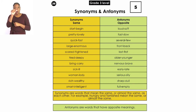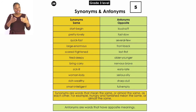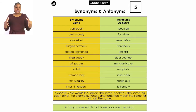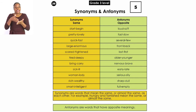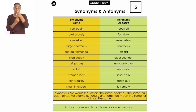You can see that in the yellow column all the words mean the same as another word or almost the same. 'Start' can mean 'begin,' 'pretty' can mean 'lovely,' 'quick' can mean 'fast,' 'large' can mean 'enormous,' 'scared' can mean 'frightened,' and so on and so forth. If you look at me, I am a woman but I can also be called a lady. So a synonym is a word that means the same or has the same meaning as another word.